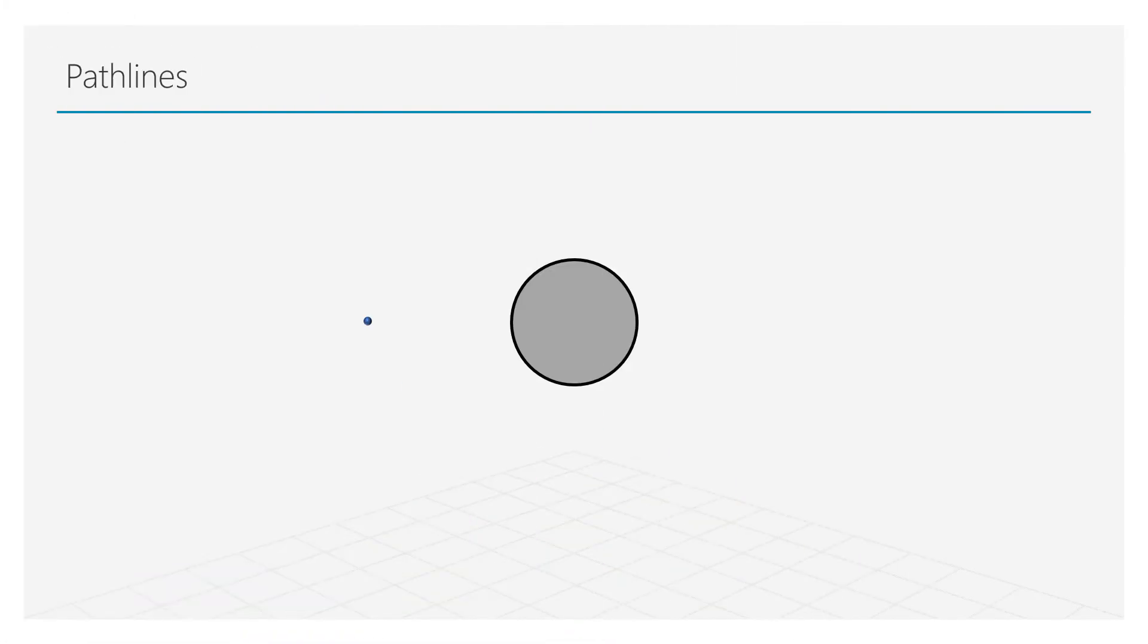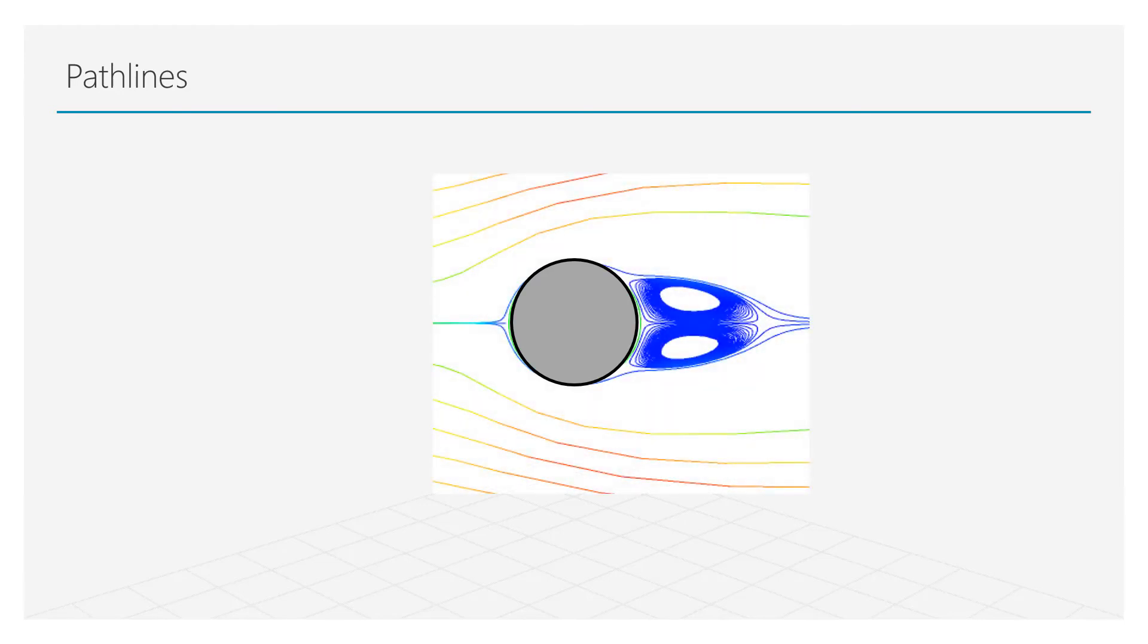In addition to streamlines, we also use pathlines and streaklines to describe the motion of a fluid. A pathline is the line traced out by the trajectory of a moving particle as it flows in the flow field. To define a streak line, we have to focus our attention to a particular region in the fluid flow. If we release fluid particles at this exact location in the flow field, the line connecting all individual particles crossing this unique location will form a streak line.